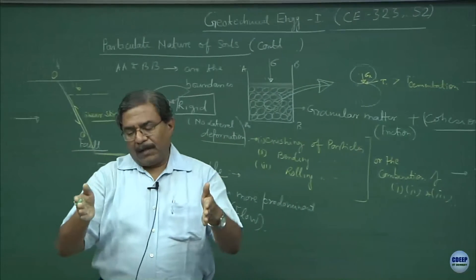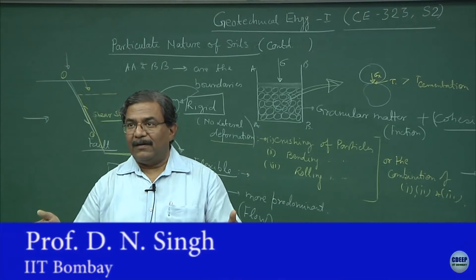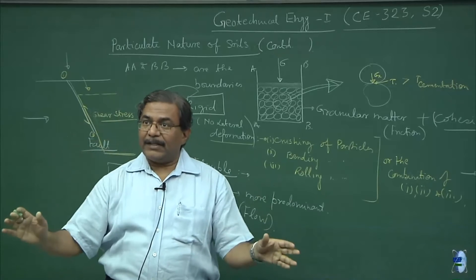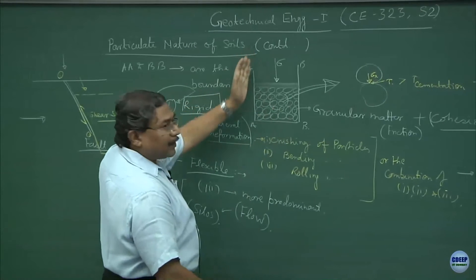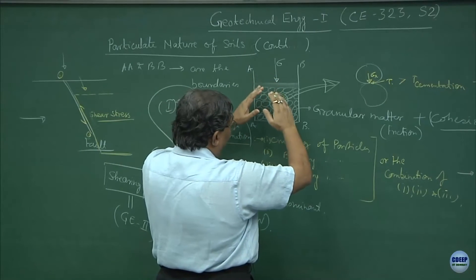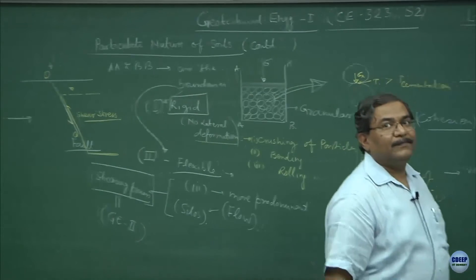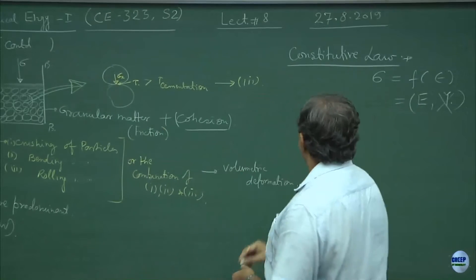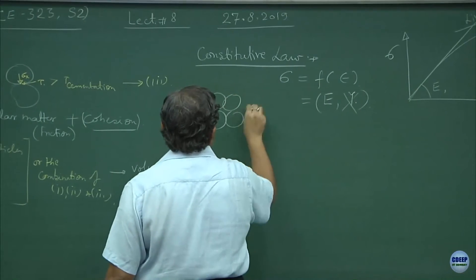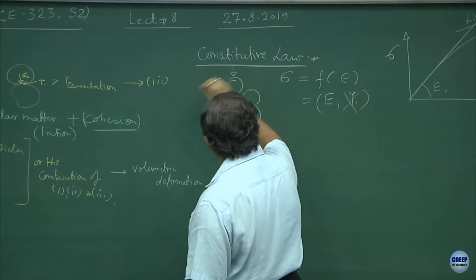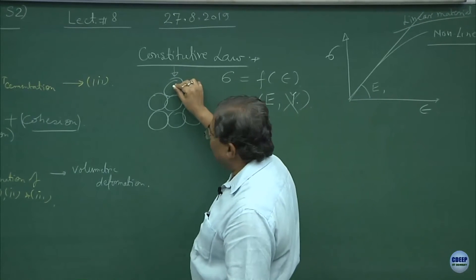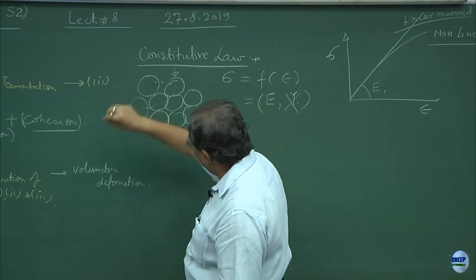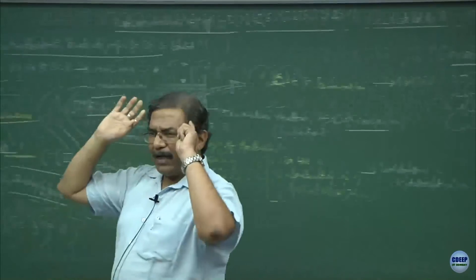When the boundaries are flexible, the material is more free — prone to flow outside. The process is because of rolling. In the basic model, you have a set of particles: if I press from the top, this particle will slide over and acquire a new position, and the next particle will also slide over and acquire a new position. Everything is being restrained by the boundaries.